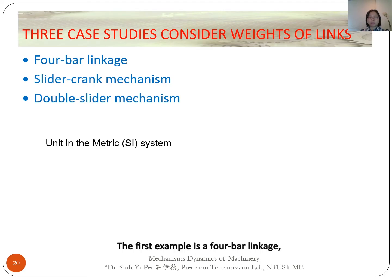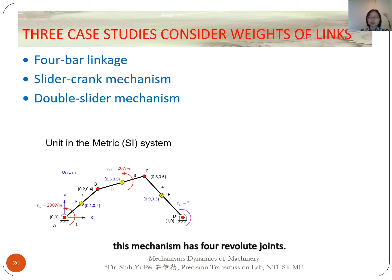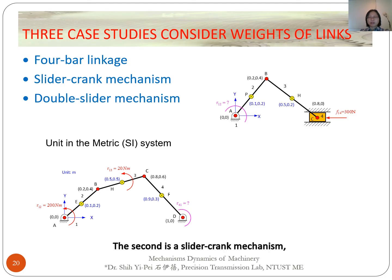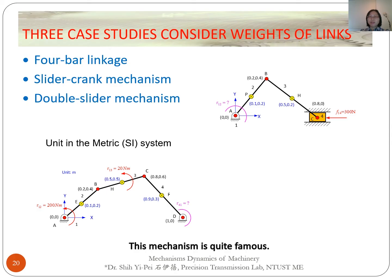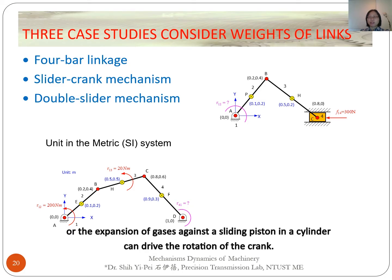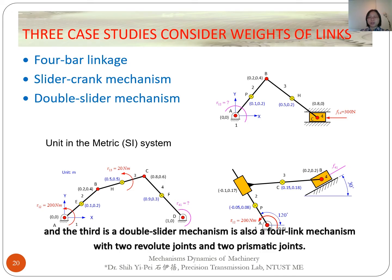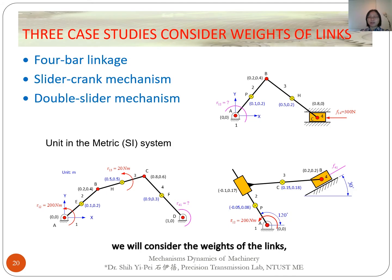I will give you three examples. The first example is a four-bar linkage — this mechanism has four revolute joints. The second is a sliding crank mechanism, a four-link mechanism with three revolute joints and one prismatic joint. The third is a double-slider mechanism. In the three cases, we will consider the weights of the links, and the basic units use the metric system.